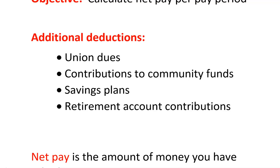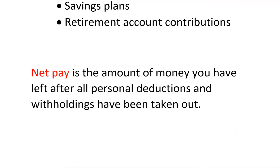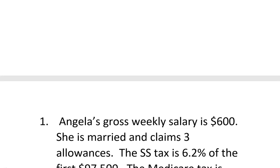Additional deductions that might be taken out are union dues. For instance, those who work at Bobcat, if they're involved in the union, they might take their union dues out of their paycheck. Maybe they regularly contribute to a community fund — sometimes your business will do that. Savings plans — maybe every month part of your check goes into checking, part into savings. Sometimes you put money into a retirement account every single paycheck. Net pay is the amount of money you have left after all personal deductions and withholdings have been taken out.